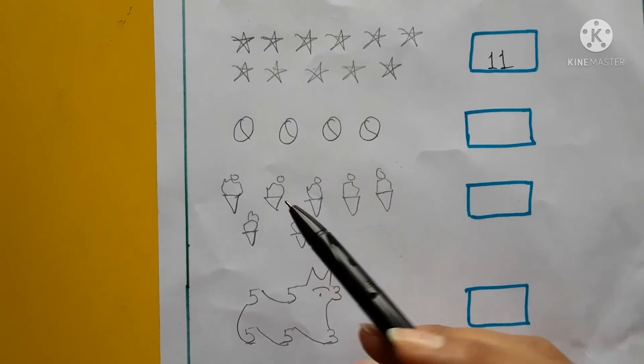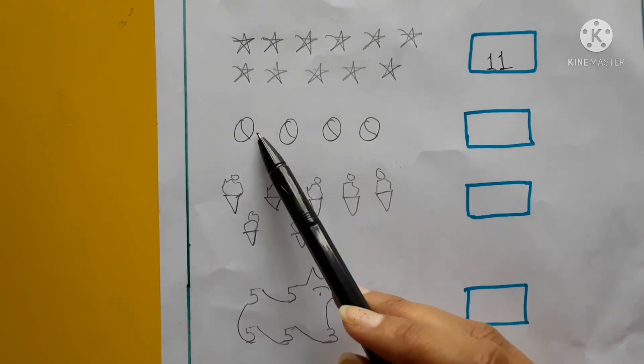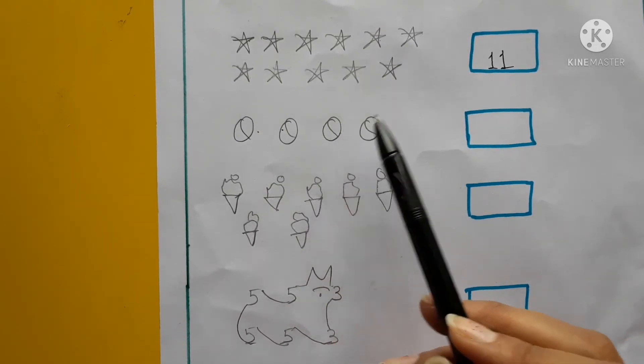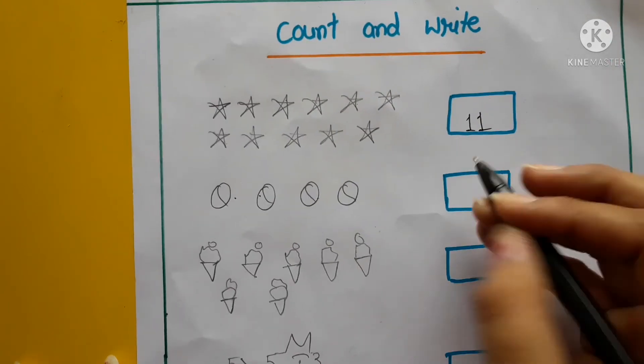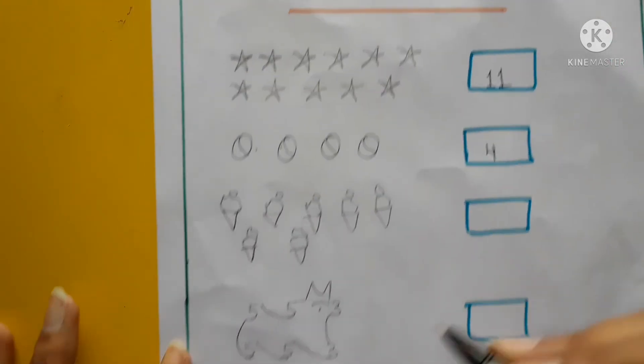Next, ball hai yeh. Inhe count karna hai, kitne balls hai? 1, 2, 3, 4. 4 balls hai na. Toh hum yaha pe 4 mention karna hai. Okay?